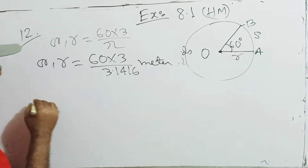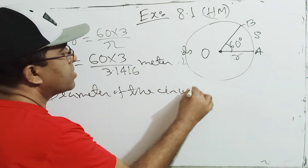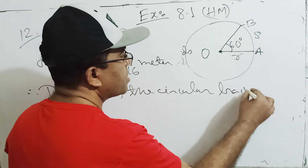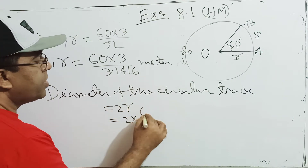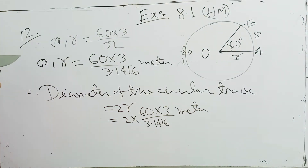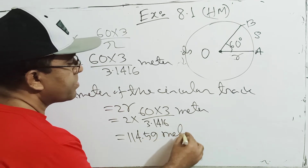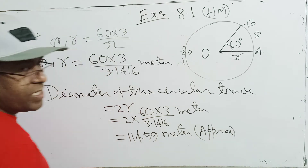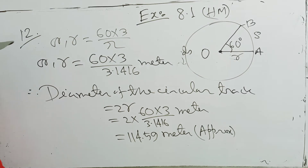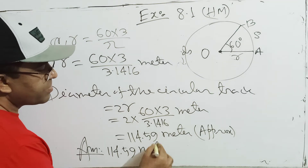This is the diameter. So the diameter of the circular track equals 2 into R, which is 2 into 57.something into 3.1416 — therefore the diameter equals approximately 114.59 meters.